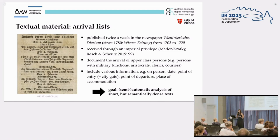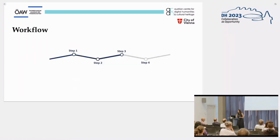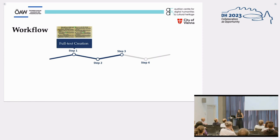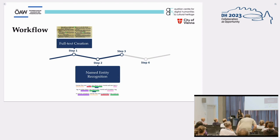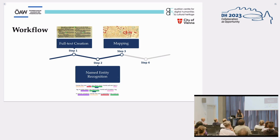The goal of the project is to utilize this semantic density with the help of semi-automatic digital methods. In practice, this is done through a four-step workflow. First, reliable full texts are created as a central foundation. Second, the full text basis is semantically enriched through named entity recognition. Third, the data can be mapped on historical city plans of Vienna — this is the step we are currently working on most. I will mostly talk about insights from the first two steps, but will also give a first glimpse into preliminary findings.